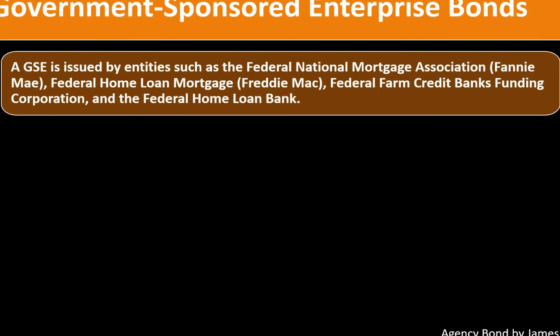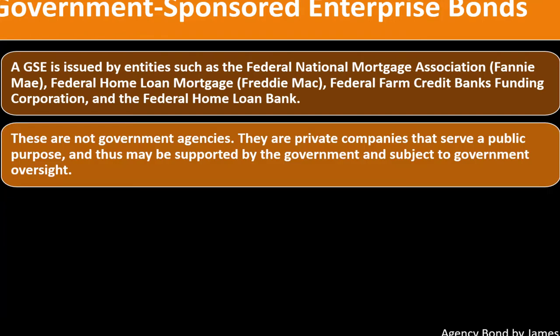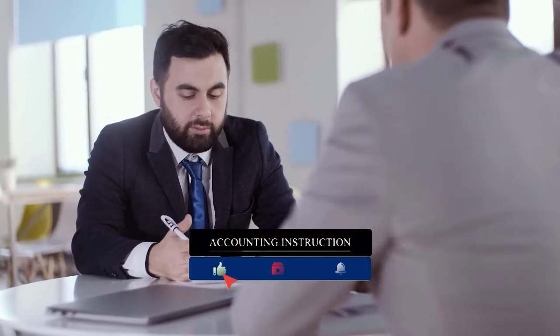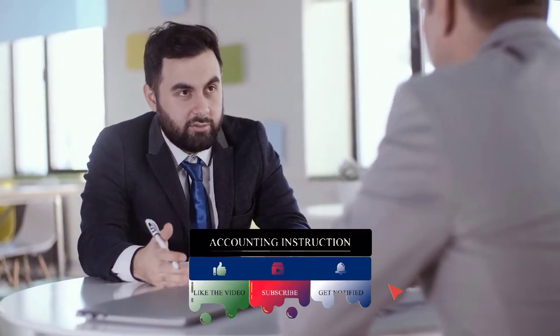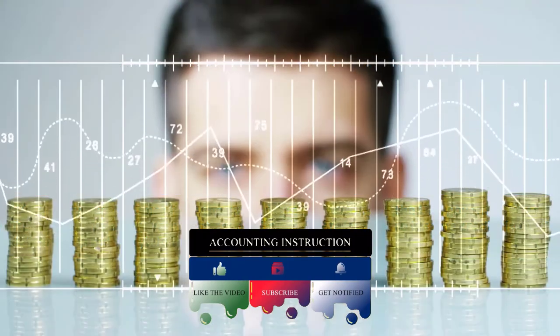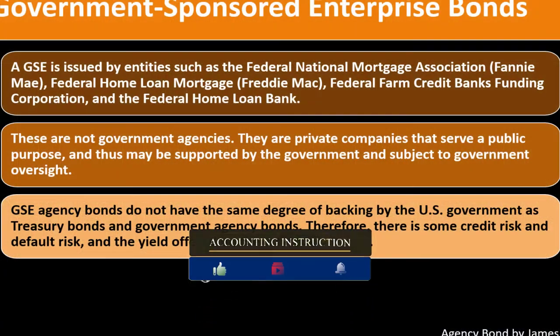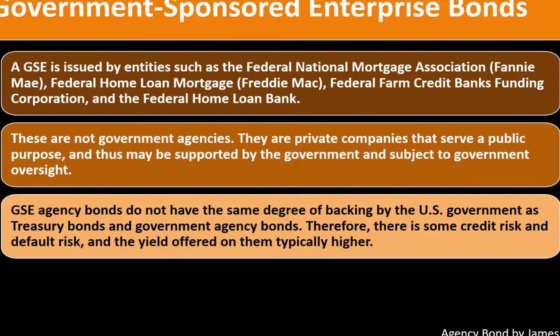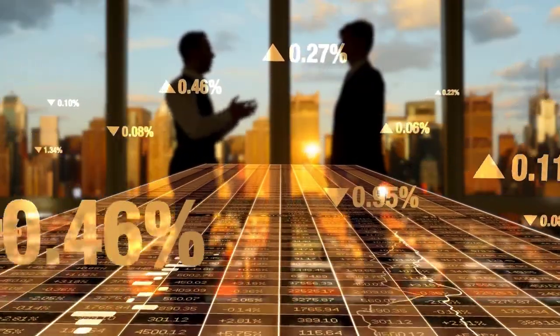GSE bonds are issued by entities such as the Federal National Mortgage Association (Fannie Mae), Federal Home Loan Mortgage Corporation (Freddie Mac), Federal Farm Credit Banks Funding Corporation, and the Federal Home Loan Bank. These are not government agencies — they are private companies that serve a public purpose and may be supported by and subject to government oversight, making them quasi-governmental entities.